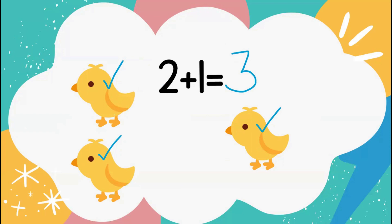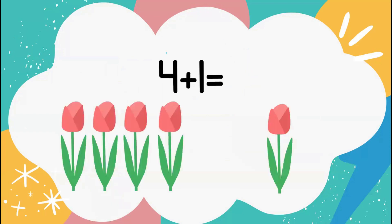Now let's take a look at 4 plus 1 equals. We have a group of 4 and we want to add 1 to their group. Let's count the total: 1, 2, 3, 4, 5. Good job — 4 plus 1 is 5.